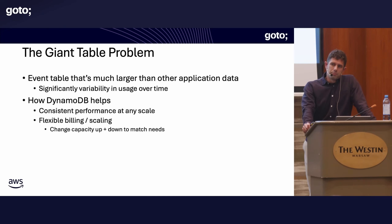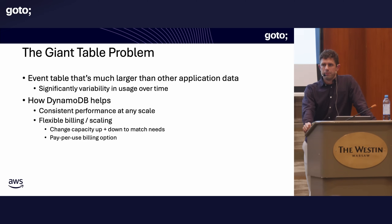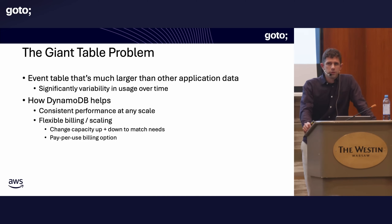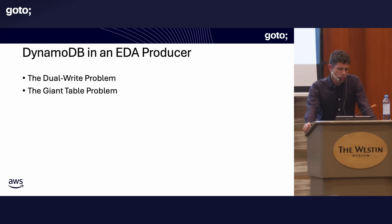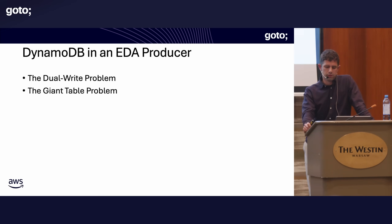Dynamo has flexible billing and scaling to change capacity up and down to meet needs during the day, week, and month. If you don't know how much capacity you need, or it's unpredictable, or you just don't want to deal with it, there's also a pay-per-use billing option — just like S3, SQS, Lambda, API Gateway. You can use Dynamo with pay-per-use and not provision any capacity, and it will handle it almost without limit. So Dynamo as an EDA producer solves two problems: the dual write problem keeping systems in sync, and the giant table problem with disproportionate data and weird workloads.